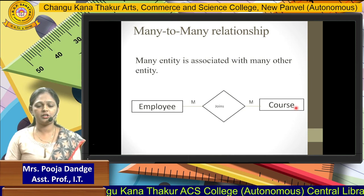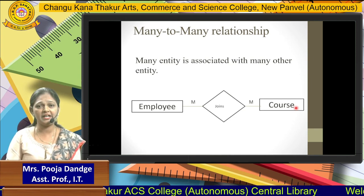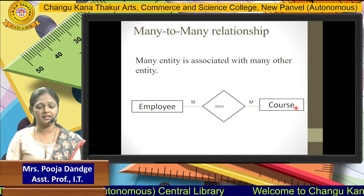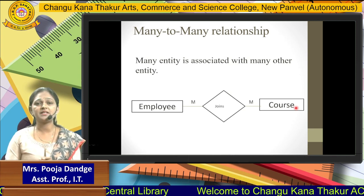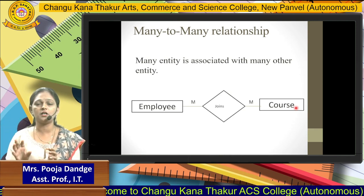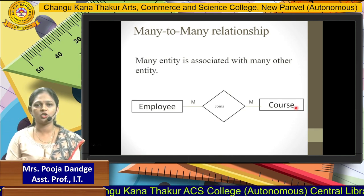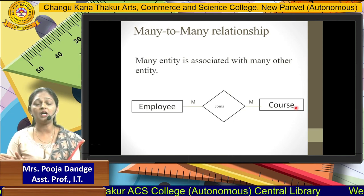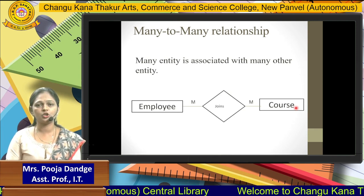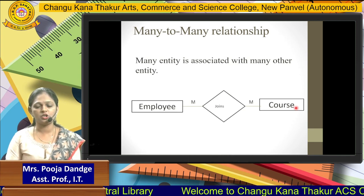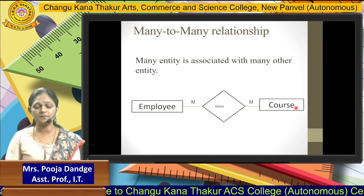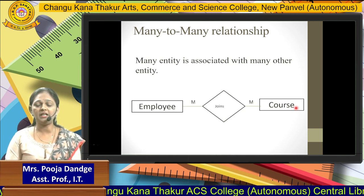The third type is the many-to-many relationship. Many-to-many relationship means many entities are associated with many other entities. For example, employees and courses — a number of employees are present in a particular organization, and a number of courses are also present. Those employees are associated with a number of courses, meaning they join different courses. That type of relationship is called a many-to-many relationship. So the three types are: one-to-one, one-to-many, and many-to-many.